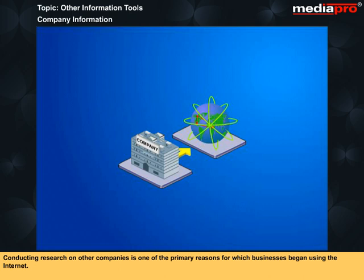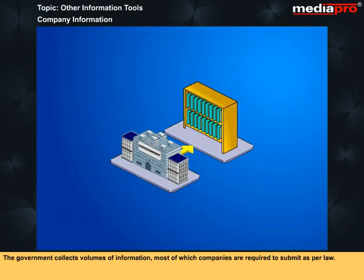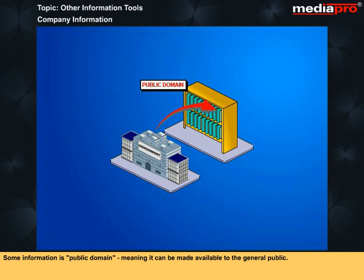Conducting research on other companies is one of the primary reasons for which businesses began using the Internet. Of course, you can always go to another company's website to learn about them. But several government resources give you information beyond what most companies post on a site. The government collects volumes of information, most of which companies are required to submit as per law. Some information is public domain, meaning it can be made available to the general public.